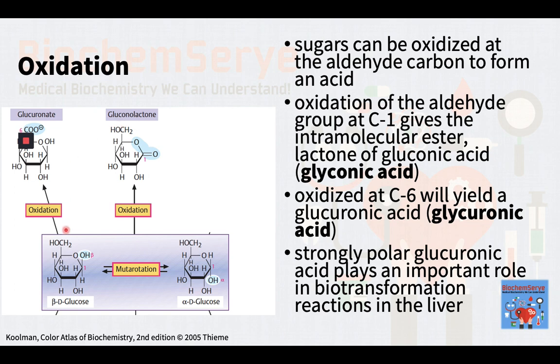On the other hand, when glucose is oxidized at C6, glucuronic acid, a glycuronic acid, is formed. The strongly polar glucuronic acid plays an important role in biotransformations in the liver.